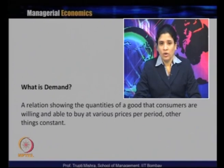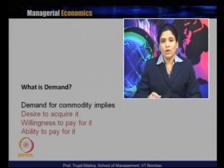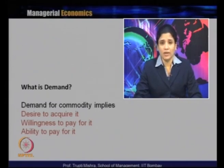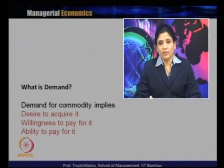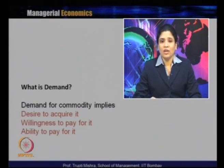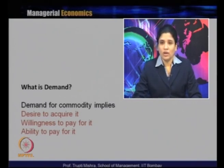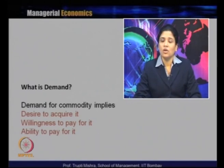Looking at the definition, there are two key points: willing to buy and able to buy. Demand for a commodity depends on three preconditions. The first is the desire to acquire it — even if a consumer has the willingness and ability to pay, if they have no desire to acquire the product, it cannot be converted into demand. The consumer must wish for and desire the product for it to count as demand.